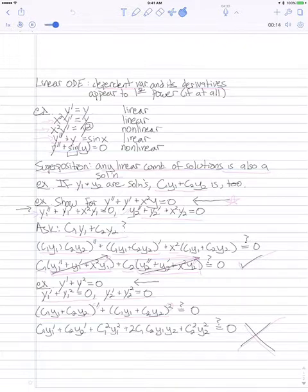So let's start out with the definition. An ODE is linear if its dependent variable and all the derivatives appear to the first power, if at all. And another way of saying that is that anything involving the dependent variable appears only as a linear monomial.